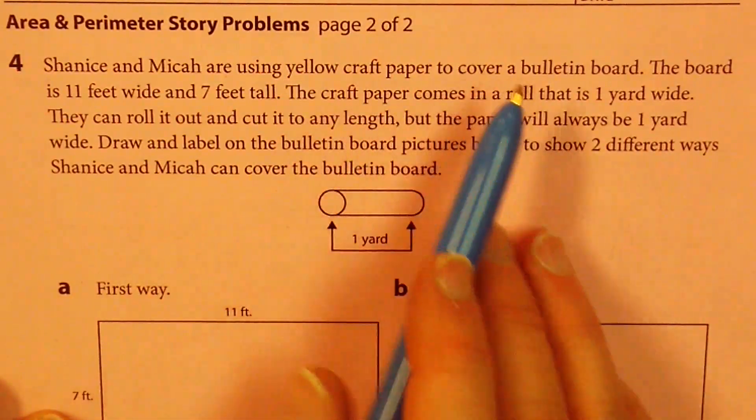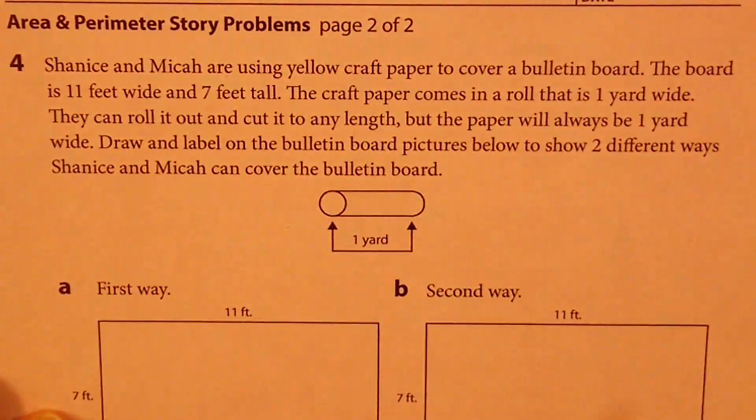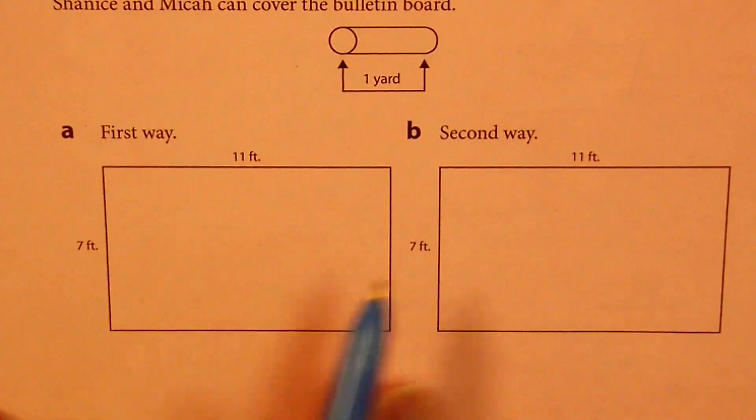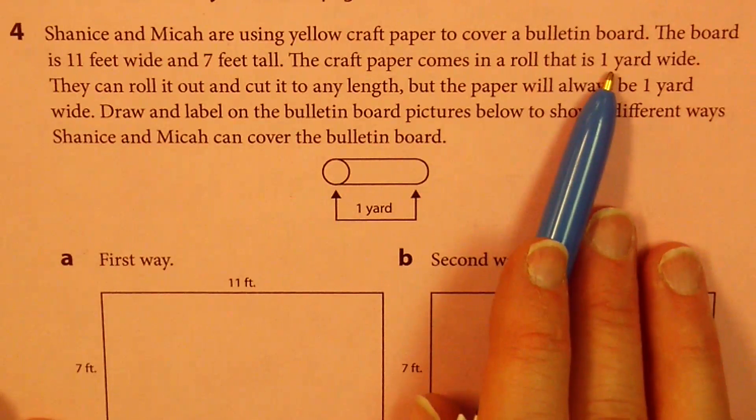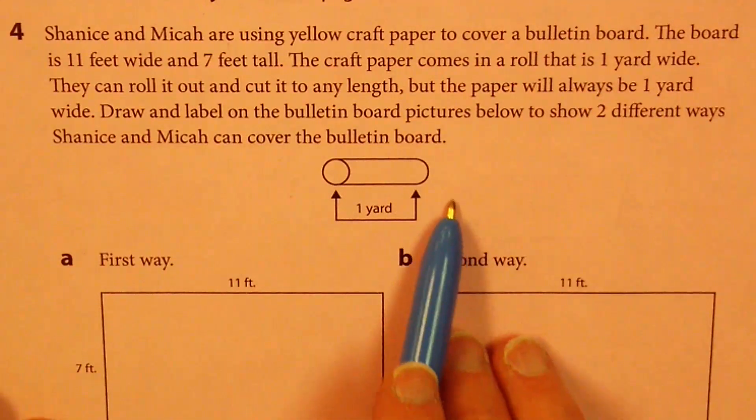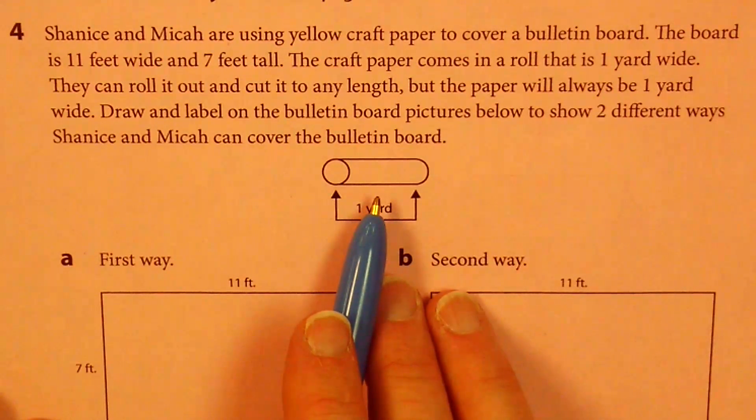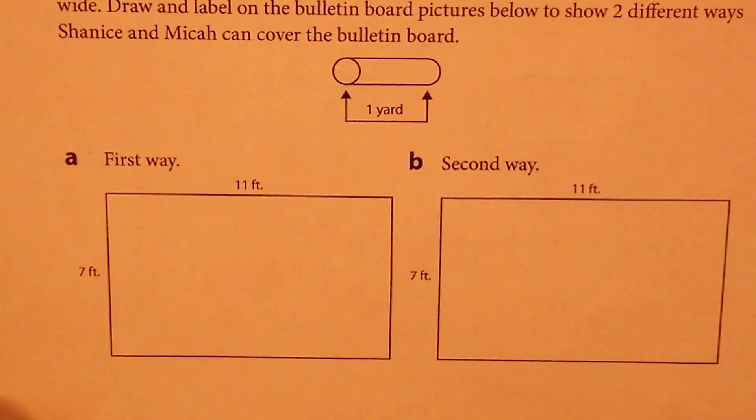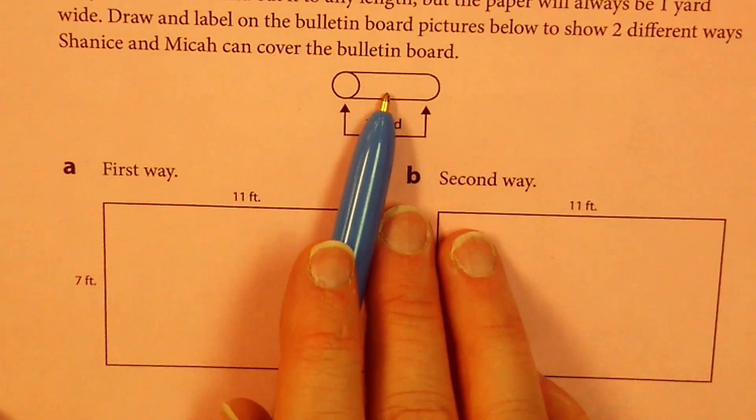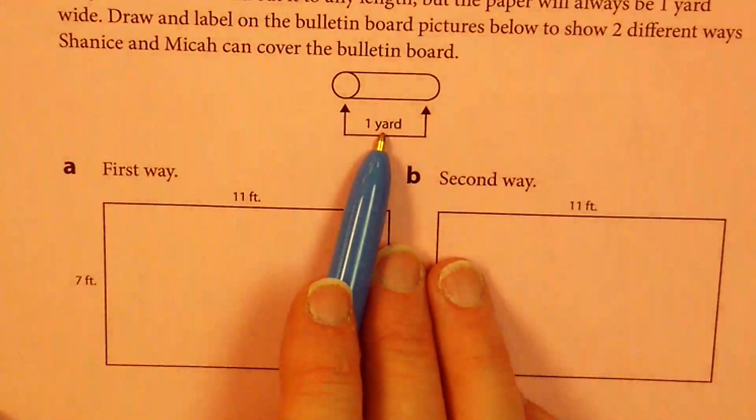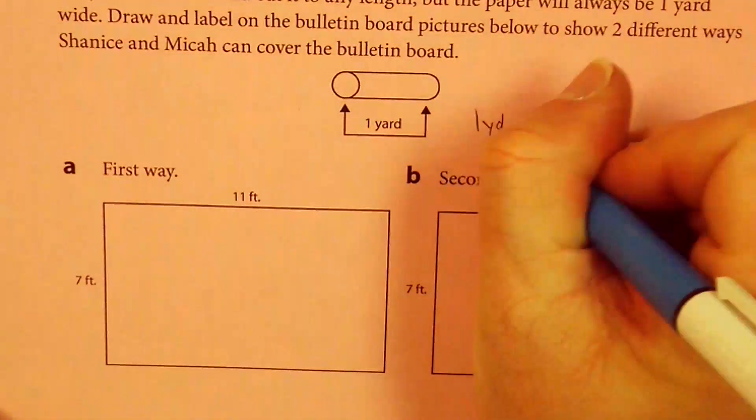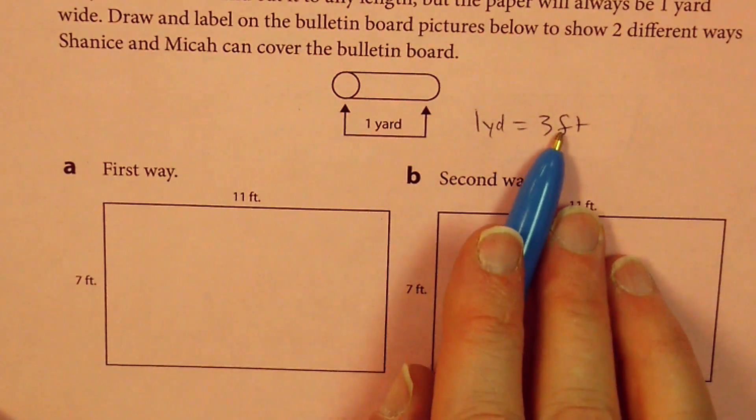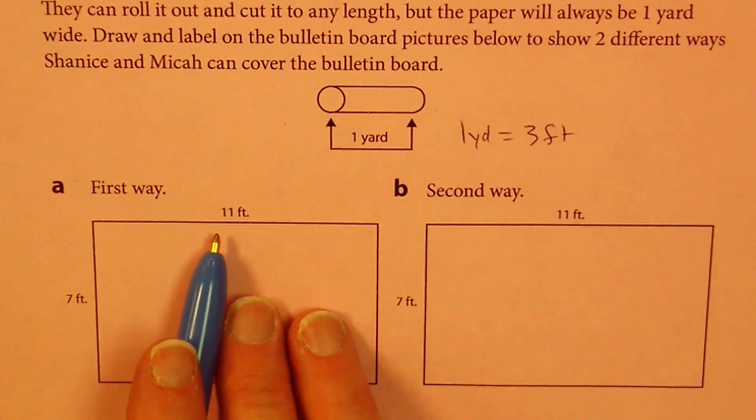Shanice and Micah are using yellow craft paper to cover a bulletin board. The board is 11 feet wide and seven feet tall. They drew it there. The craft paper comes in a roll that is one yard wide. They can roll it out and cut it to any length, but the paper will always be one yard wide. Draw and label on the bulletin board pictures below to show two different ways Shanice and Micah can cover the bulletin board. So I want you to picture this roll of paper. The tube itself is one yard. What is one yard? One yard is three feet. That should help us visualize this a little bit.